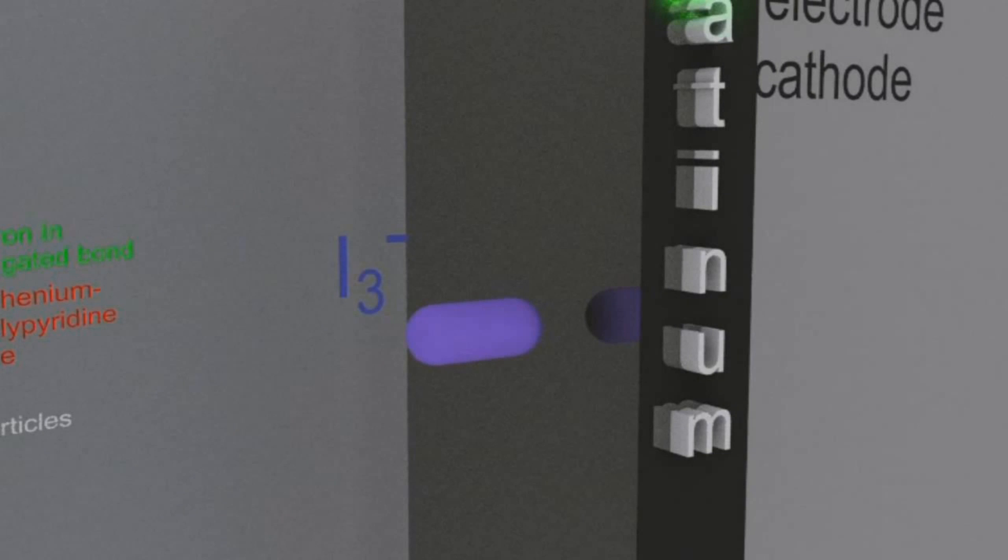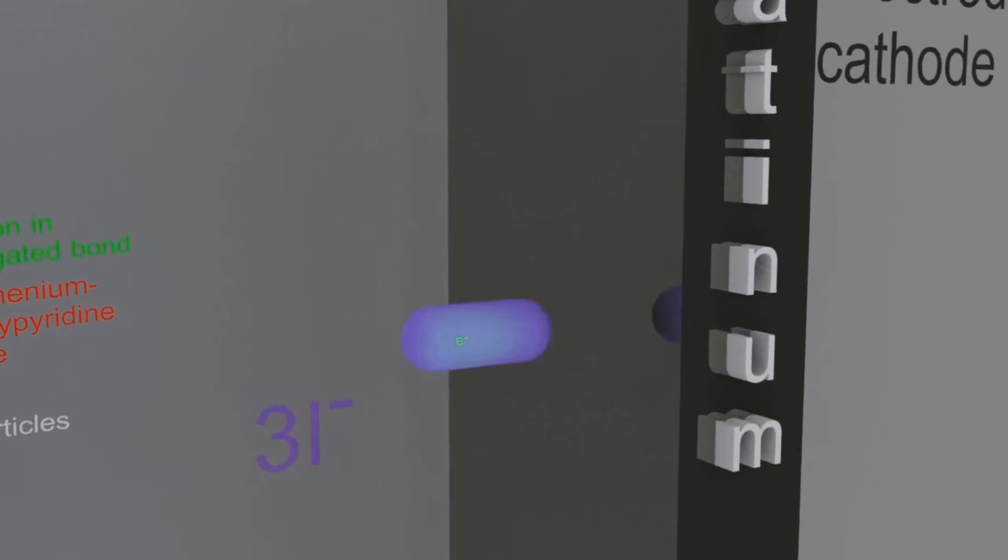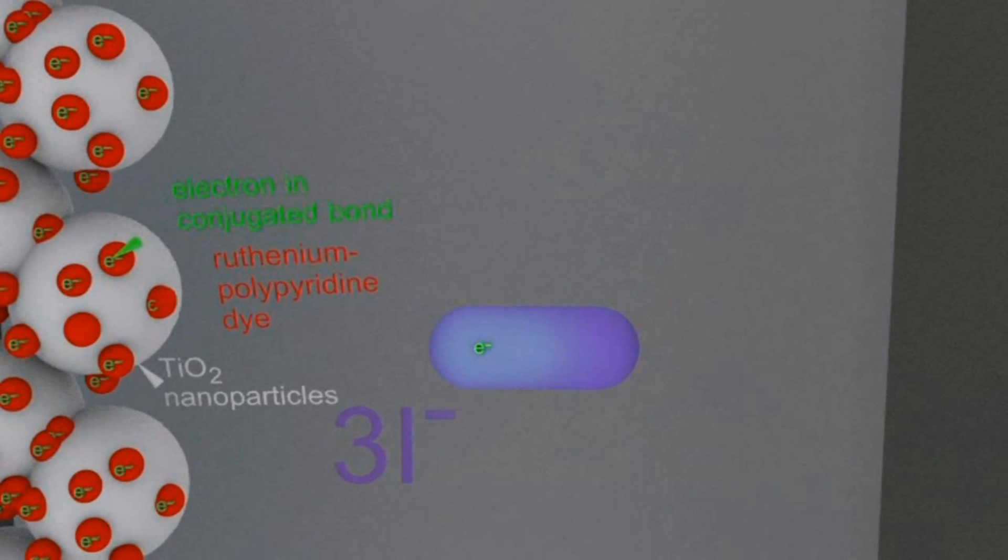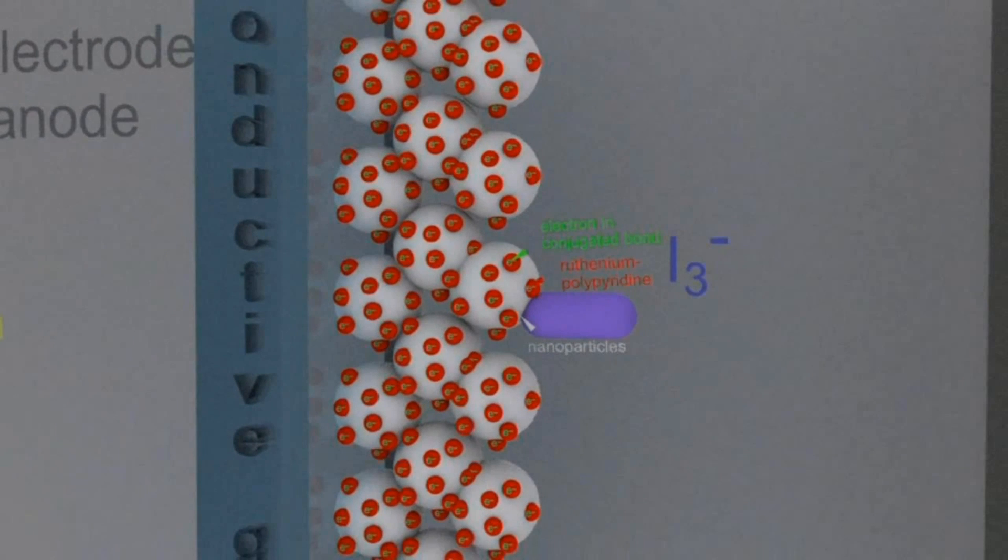There it moves on to the triiodide ion, which then becomes three iodide ions. And that electron is transported back to the dye, so the whole thing can begin again with another light particle.